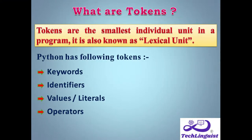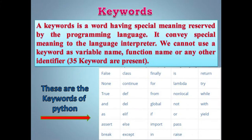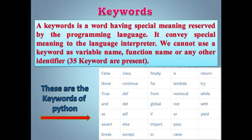There are four different types of tokens available in Python: keywords, identifiers, values or literals, and operators. Keywords are reserved words — matlab special meanings hote hain programming language mein. A keyword is a word having special meaning reserved by a programming language. There are 35 keywords present in Python.